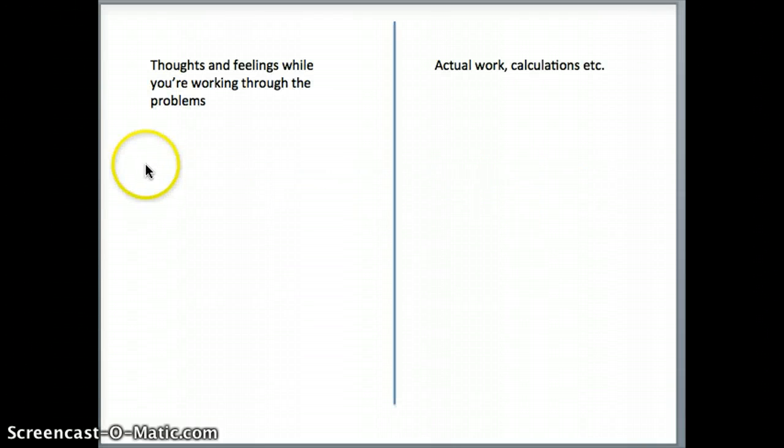So the method is very simple. You're going to have a problem in front of you, and what you're going to do is, in your scratch paper, you're going to divide it into two sides. You have two columns. On one side you'll be doing the actual work. Now, if this is a very simple problem, you don't have any complication in solving that problem, then you just work through the problem.